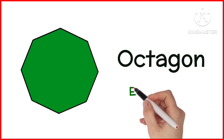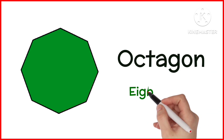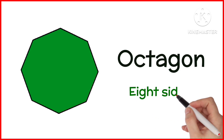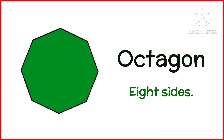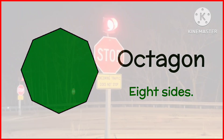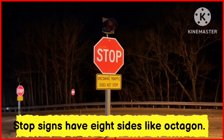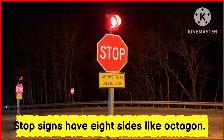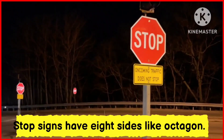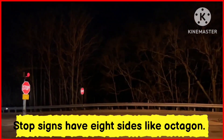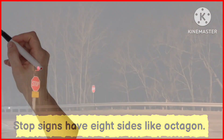Octagon. Octagon has 8 sides. Stop signs have 8 sides like an octagon.